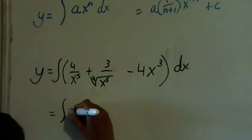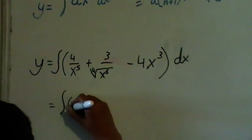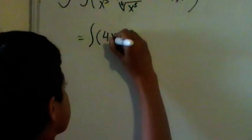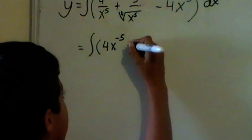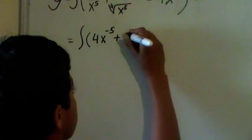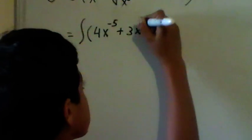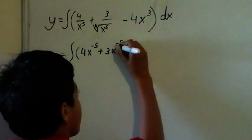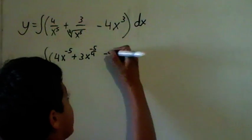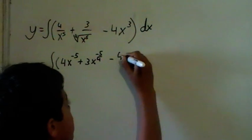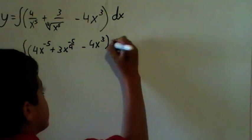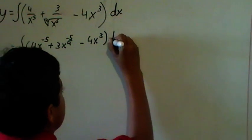Equals integration sign. Then, bracket 4x power minus 5 plus 3x power minus 5 over 4. Minus 4x power 3 bracket dx.